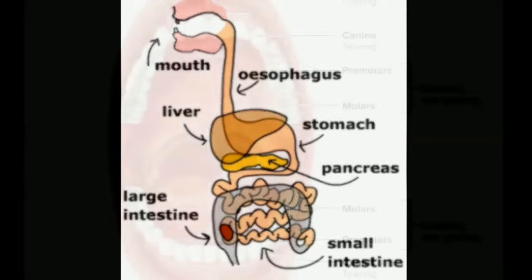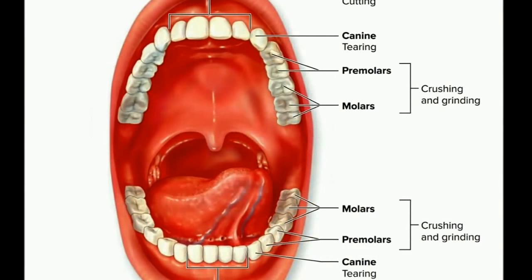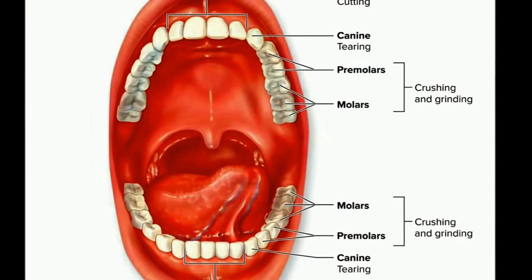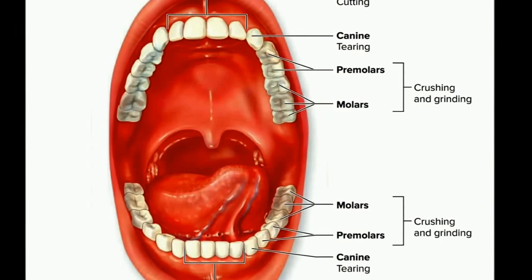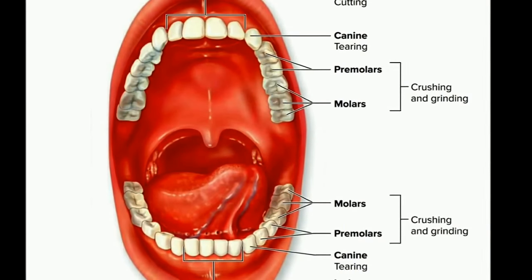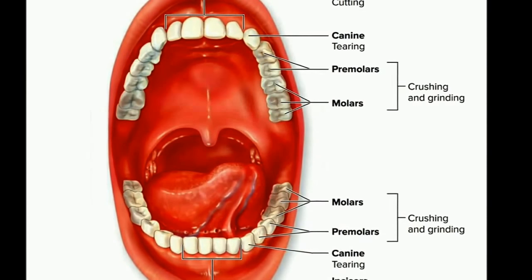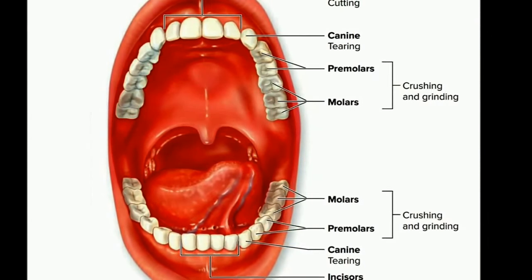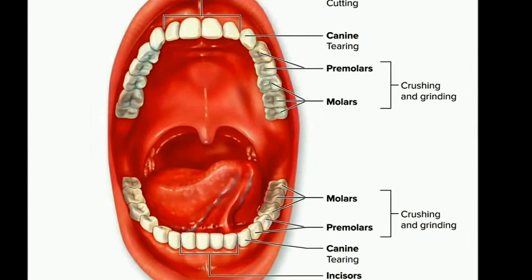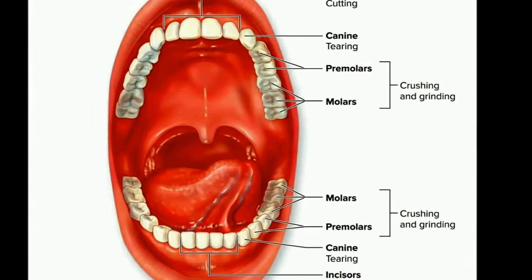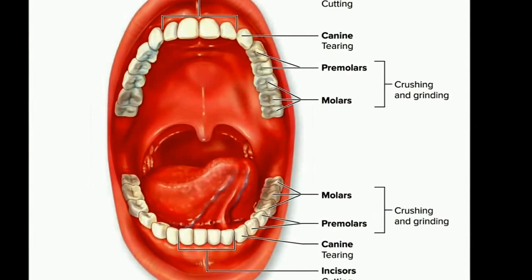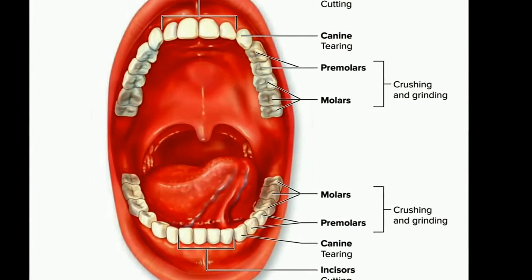When we open the mouth, we can observe the buccal cavity where teeth, tongue and salivary glands are present. There are 4 types of teeth in permanent type: Incisors, canines, premolars and molars. ICPM is the code to remember. 2 by 2, 1 by 1, 2 by 2, 3 by 3 is the human adult dental formula. Whereas, in the case of milk teeth, only 20 are present.